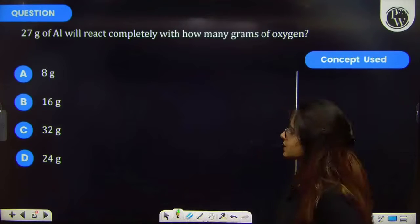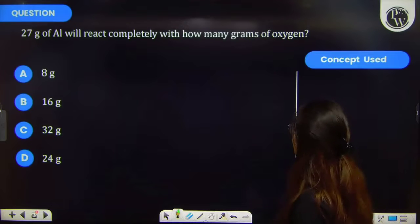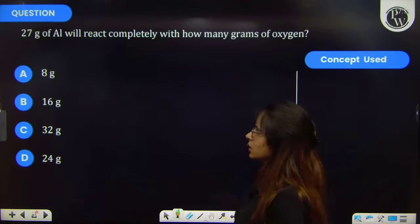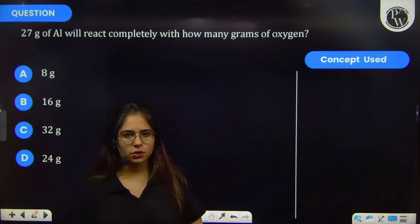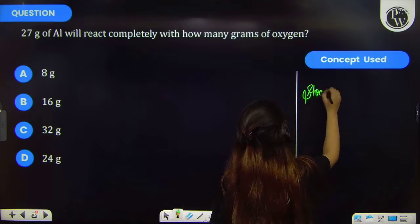Let's see this question. The question says that 27 grams of aluminium will react completely with how many grams of oxygen. So this question is based on stoichiometry. The key concept of this question is stoichiometry.